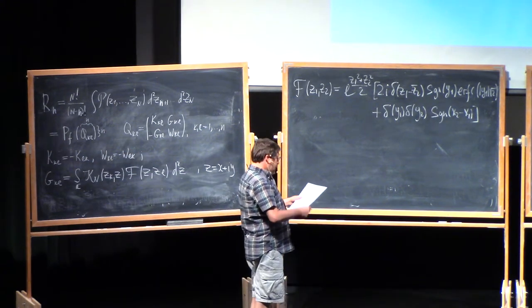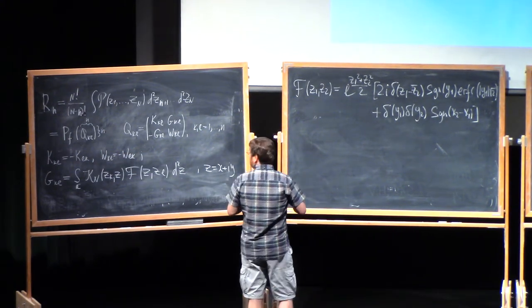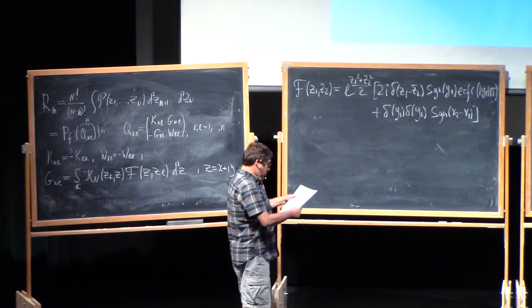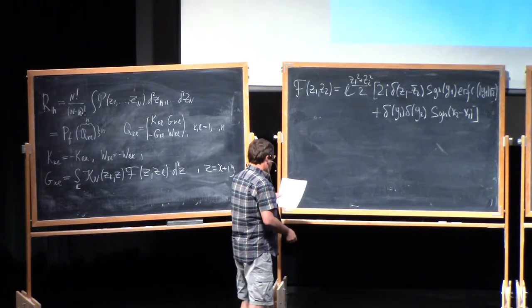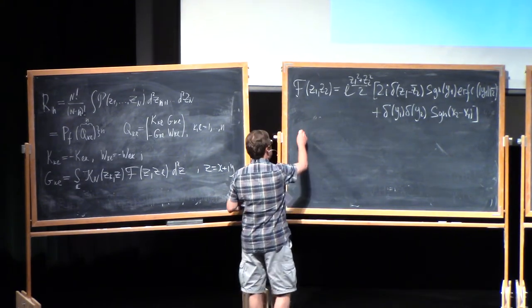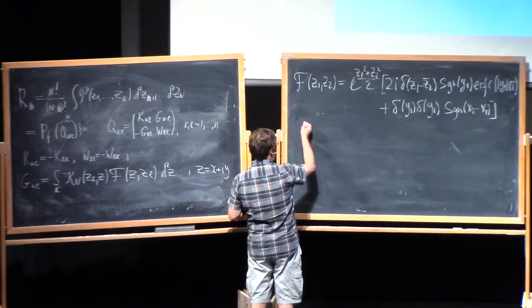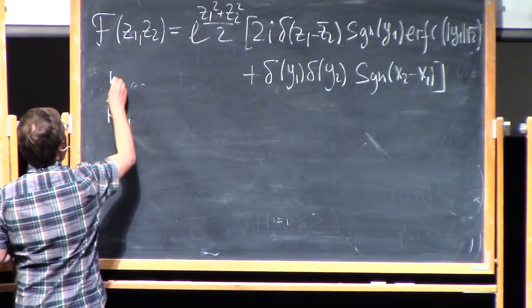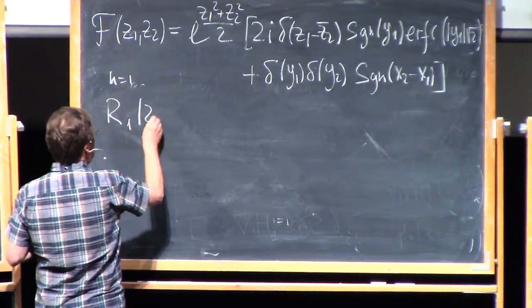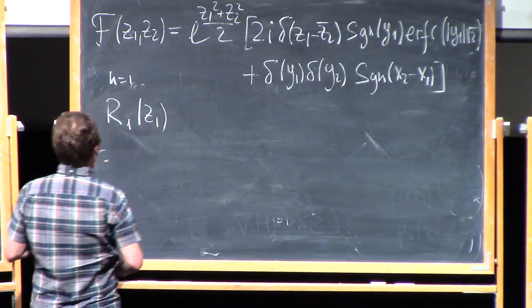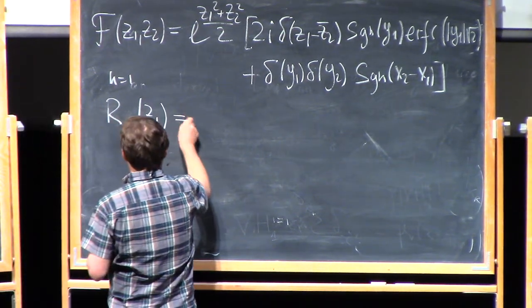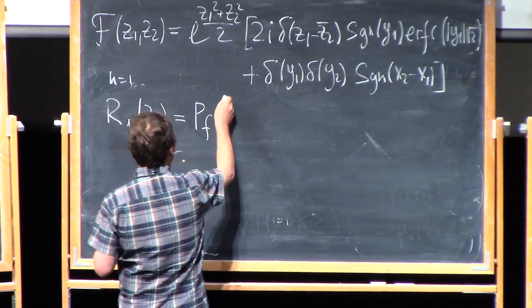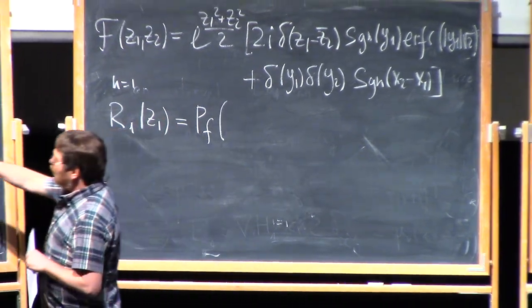But I would like to give you a bypass suggested by Sommers based on some observation due to Edelman, which allows to get this kernel relatively cheap. So what is this? Namely, suppose, and in fact, this will be the main information that I need for my modest goals.